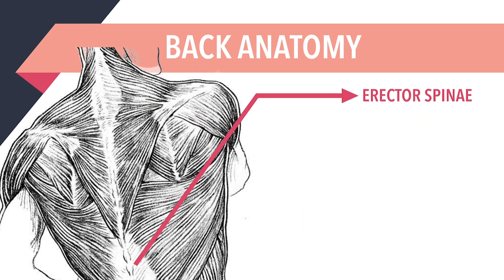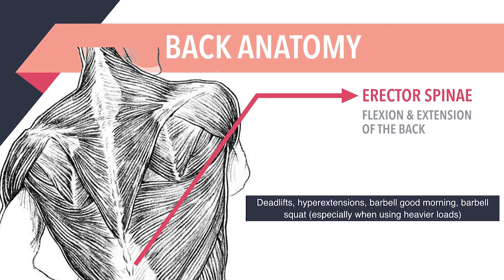Last but not least, we have the erector spinae muscles, also known as the spinal erector. These muscles line the spinal column from the lower to the upper back and allow you to flex and extend your back in any given direction. They also support and protect your vertebrae, meaning that stronger spinal erectors lead to improved posture and core stabilization. The erector spinae can be targeted with deadlifts, hyperextensions, barbell good mornings, and the barbell squat.